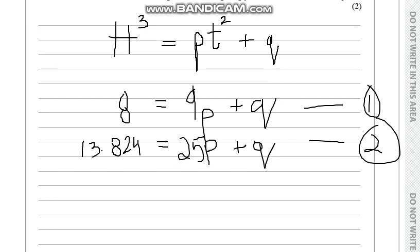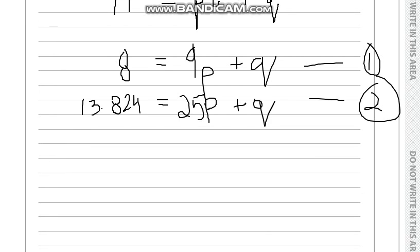Now we have to write all our methods. We solve this simultaneously. I'll put a minus sign here and cancel my q's out to get my p's first. Minus 9 from 25 gives us minus 16p equals, minus 8 minus 13.824 gives us minus 5.824.